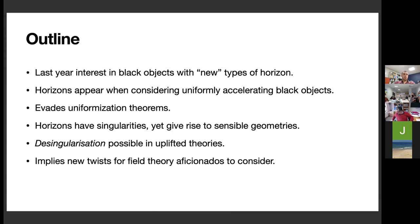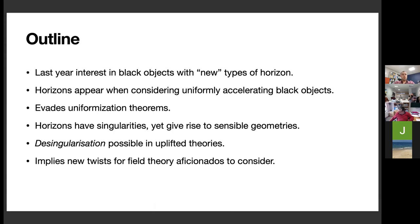One thing that is probably somewhat surprising is that there are uniformization theorems for black hole near horizons, which state that on Riemann surfaces in the UV you can have some arbitrary metric, but when you flow to the near horizon you get fixed to the constant curvature one. These solutions actually evade these theorems because they have singularities, and also because the assumptions on how supersymmetry is preserved along the flow are no longer true for these new solutions.